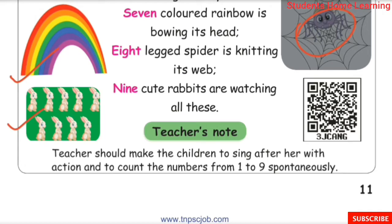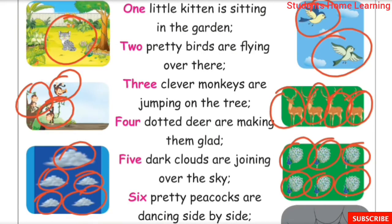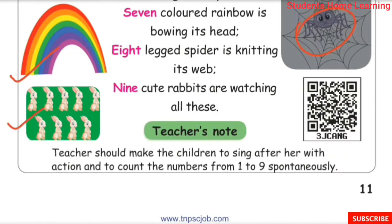One little kitten is sitting in the garden. Two pretty birds are flying over there. Three clever monkeys are jumping on the tree. Four daughter deer are making them glad. Five dark clouds are joining over the sky. Six pretty peacocks are dancing side by side. Seven colored rainbow is bowing its head. Eight-legged spider is knitting its web. Nine cute rabbits are watching all these.